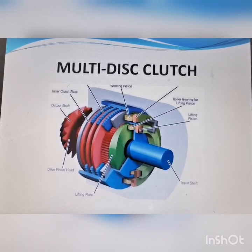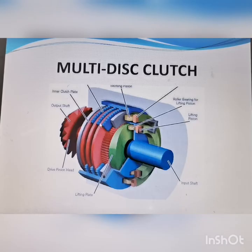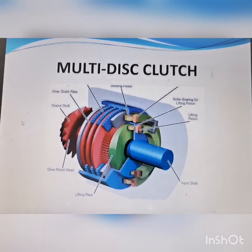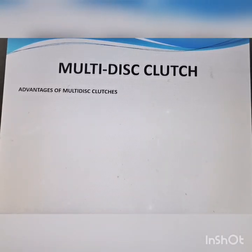The multi-disc clutch is similar to the single disc clutch except it has more than one clutch plate. You can see the multiple discs inside. Because of these extra discs it is more compact — the diameter is smaller — and engagement still occurs through friction, just as with the single disc clutch.